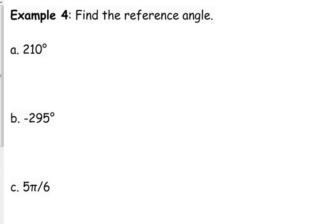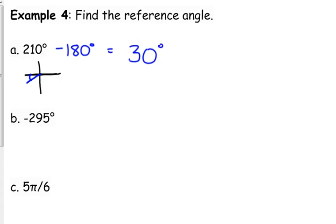If we're given the angle 210 degrees, first we need to locate where it is. 210 is in the third quadrant — it's more than 180 but less than 270. To find its reference angle, we subtract 180, which gives us a 30-degree reference angle. There's a big relationship here that will make more sense later this week.